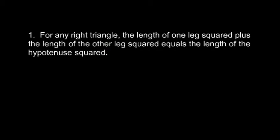So let's draw that. For any right triangle, so here's a right triangle, the length of one leg squared, so that length squared, plus the length of the other leg squared, so that length squared, is going to equal the length of the hypotenuse squared. That's one way to say the Pythagorean theorem. Here's another.